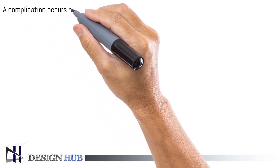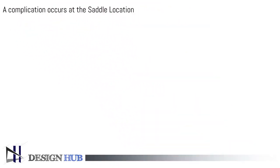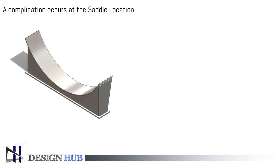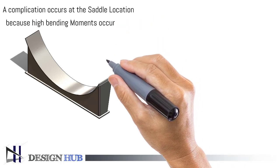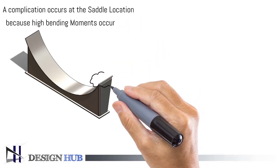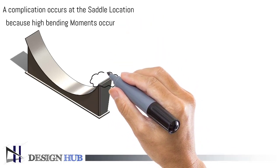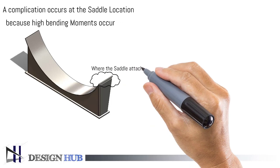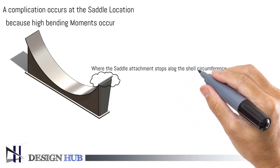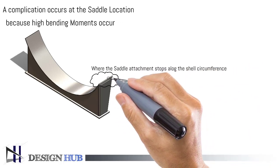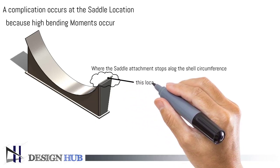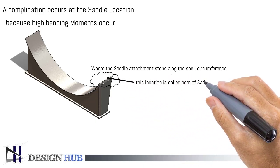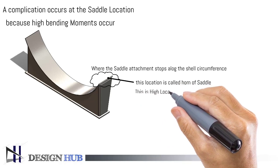Generally, complications occur at the horn of the saddle because high localized bending moments occur in this area, which cause localized shell deformation. This will reduce the ability of the shell to absorb bending.